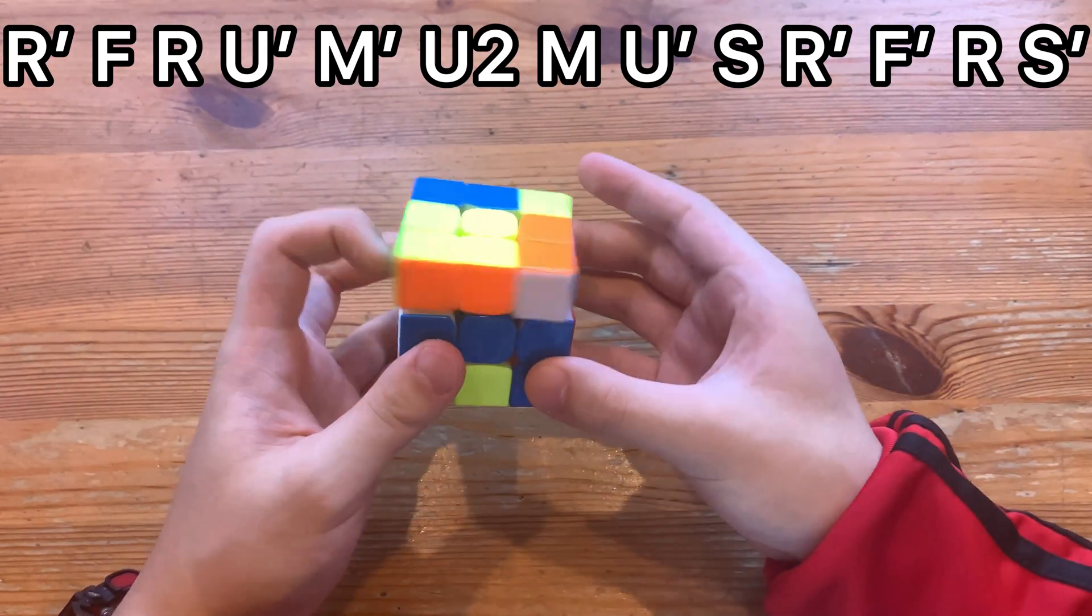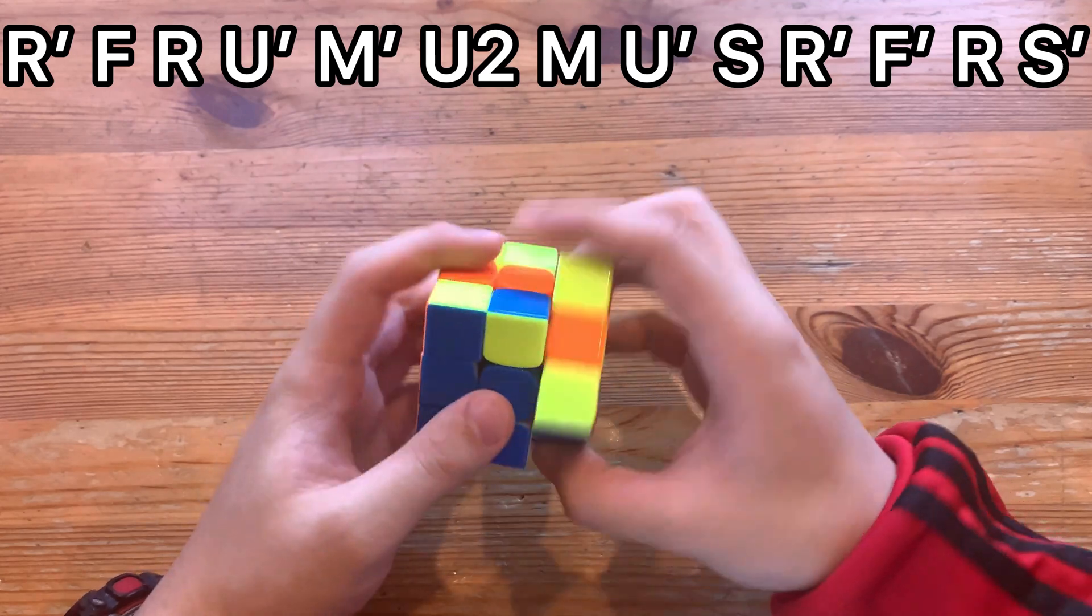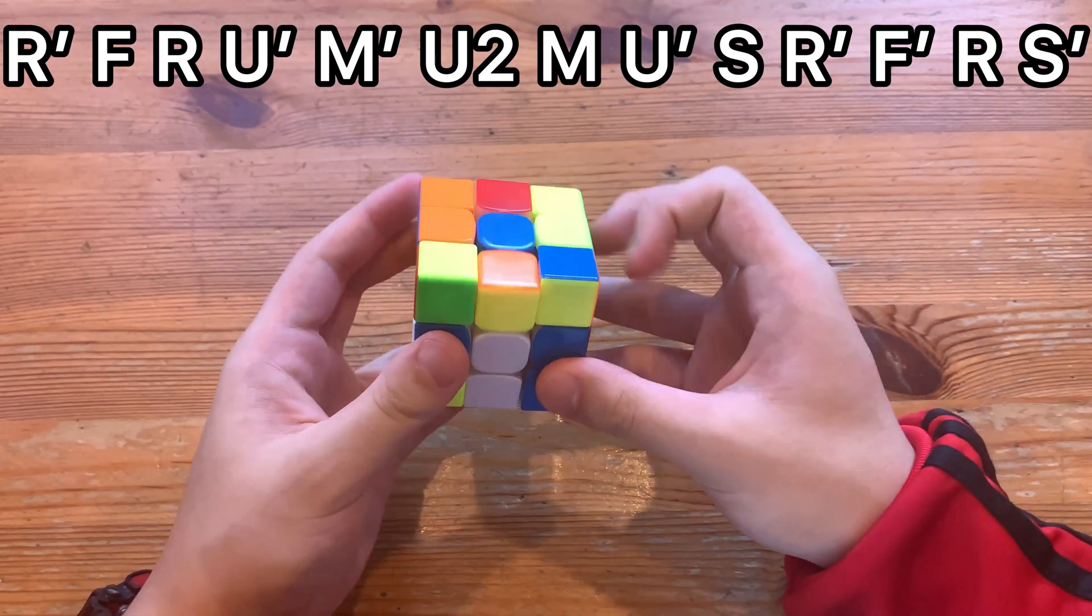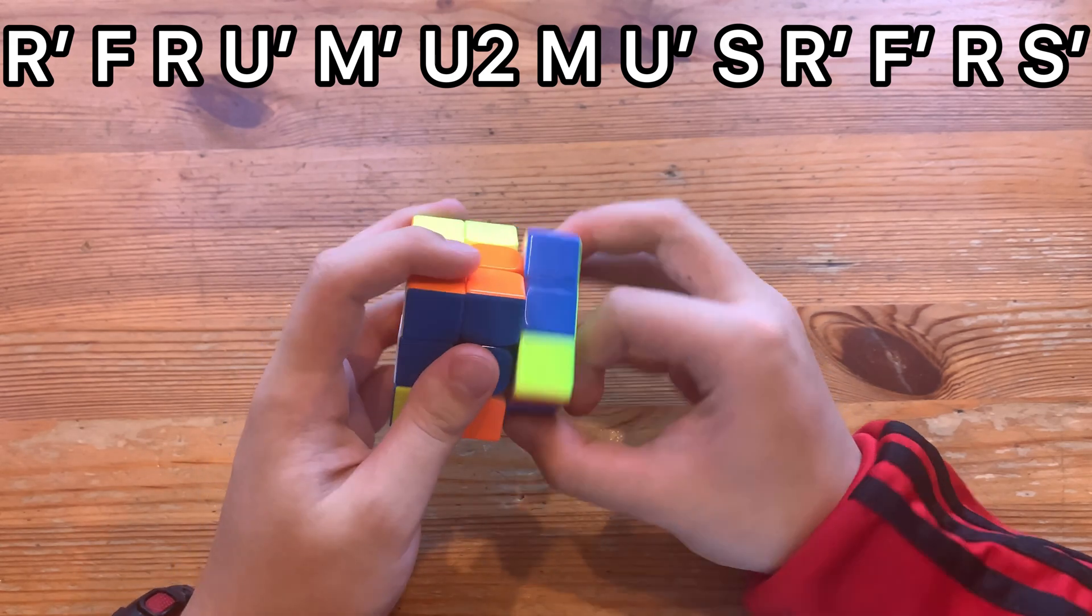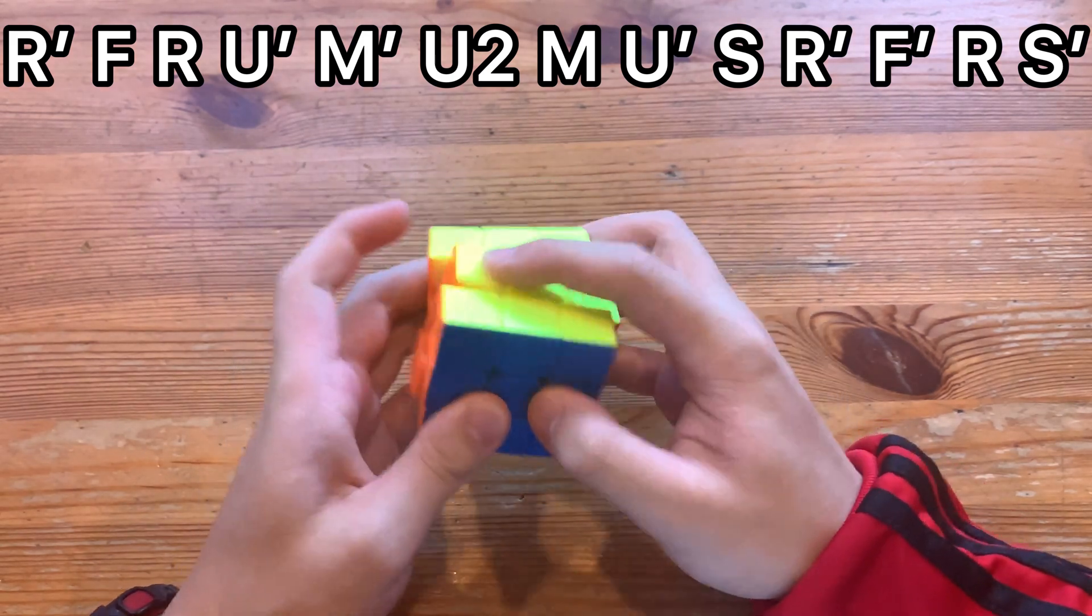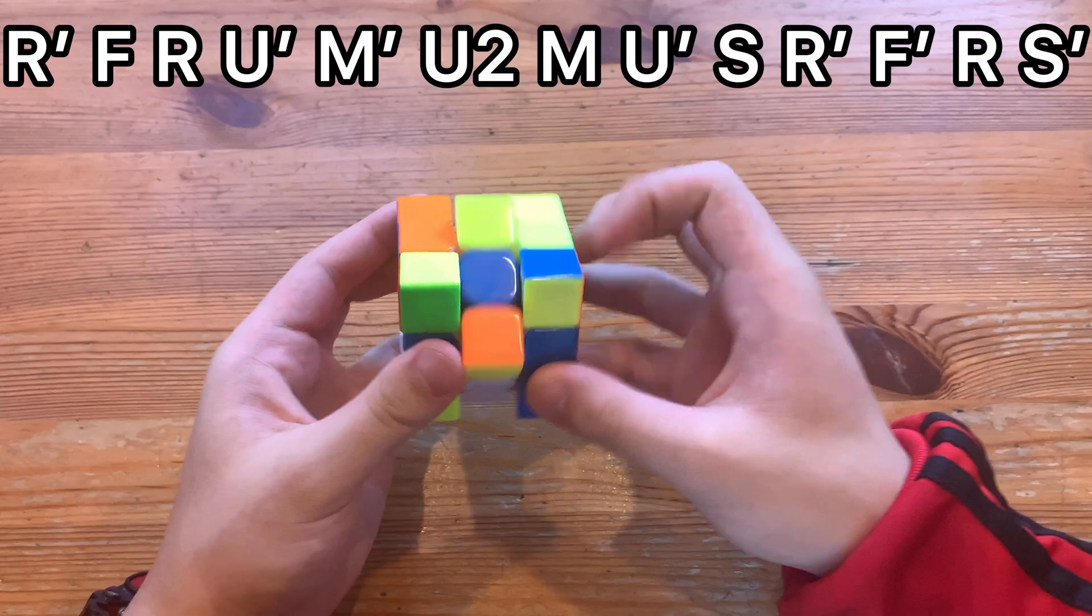And for this one there are two ways to finger trick. The first way, you do S, right index, left index, F prime, and then push the last S prime with right index. And the other way is to push S like that, and then push F prime, and then normal S prime.